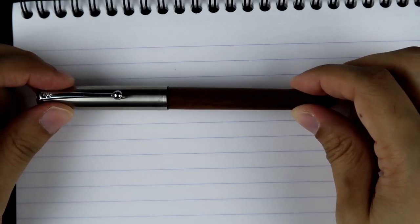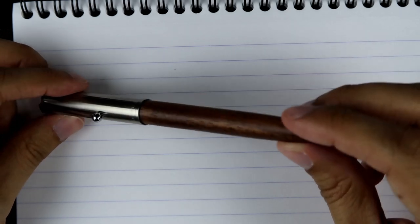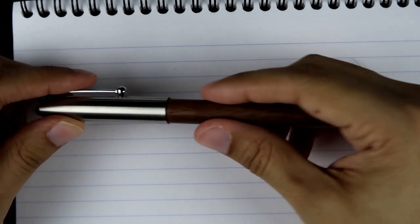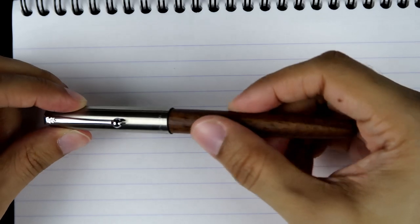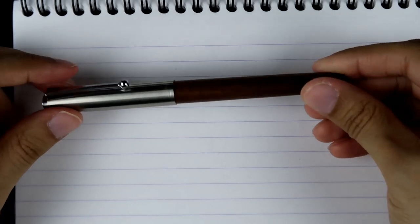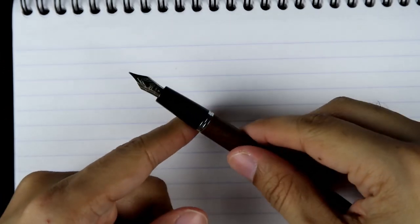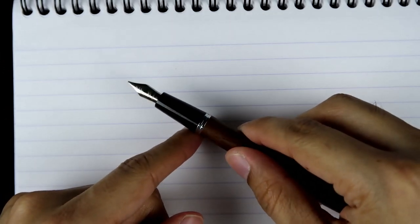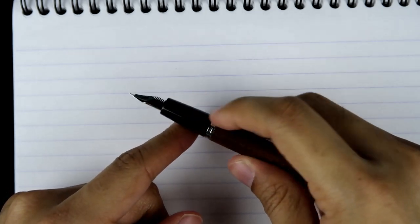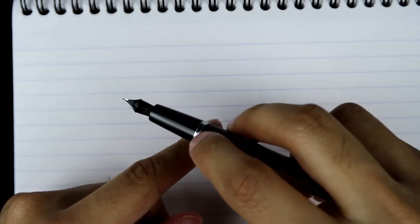Alright, let's start with the Jinhao 51A. It's got a nice wood finish, really lightweight. Pretty much feels like wood, not sure if it's real, with the silver. Let's pop it. It's got the nice steel nib with the black grip, silver accent in the middle. Now let's write with it.